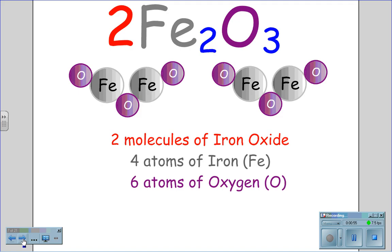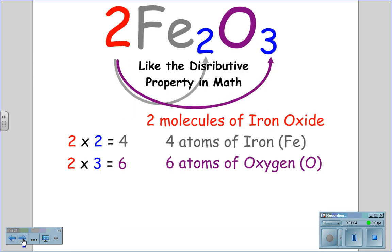Because there are two molecules of iron oxide, we see that there are actually four atoms of iron and six atoms of oxygen. We can do this mathematically using the distributive property from math. The coefficient 2 on the outside gets distributed to each of the subscripts. 2 times 2 tells us there are four atoms of iron.